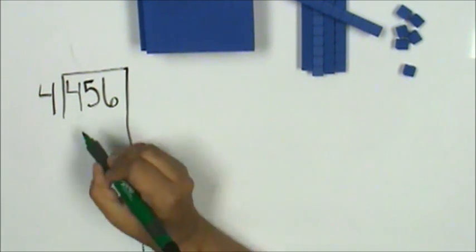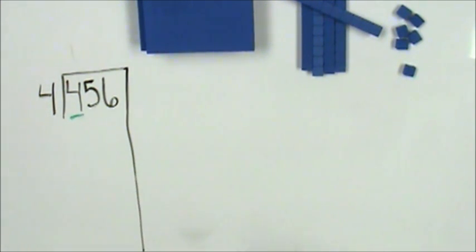Now let's think about the value of the 4. The value of the 4 is 400. Most students know or can figure out that 4 times 100 is 400.